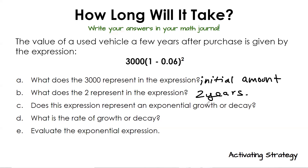Is this a growth or decay? Decay. How do we know? Because it says minus. So if we did 1 minus 0.06, that gives us 0.94, which is less than one. Remember how we talked about b being less than one. Also, think about it — if you buy a car, does it go up in value or down? Down. The moment you drive a brand new car off the lot, it decreases by 50 percent.